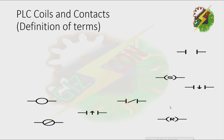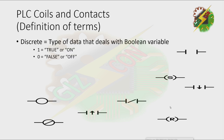First of all, let's define some terms. One of the terms is discrete. When we say discrete, it is the type of data that deals with boolean variables. When we say boolean variable, it means 1 or 0, true or false, or on and off.